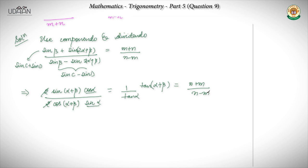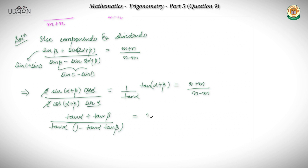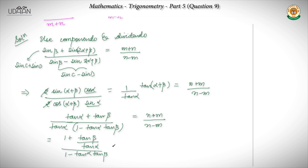Now when I expand this using the tan(A + B) formula, I get tan α plus tan β upon 1 minus tan α tan β, which equals n plus m upon n minus m.